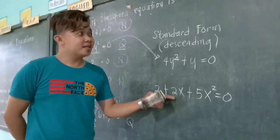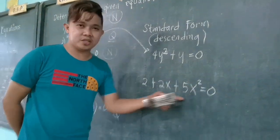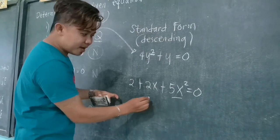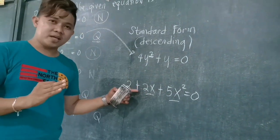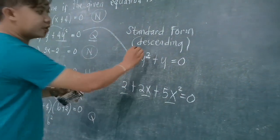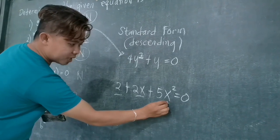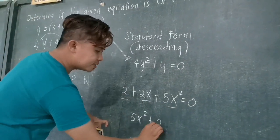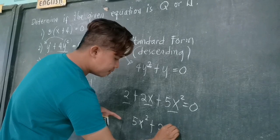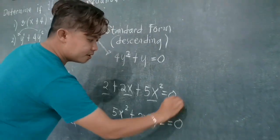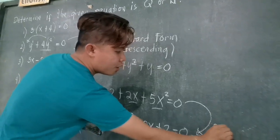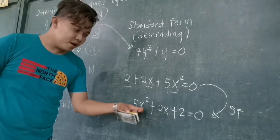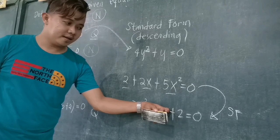How do we write the standard form of 2 plus 2x plus 5x squared? First, is this equation quadratic? Yes — it has a quadratic term, a linear term, and a constant. It is a quadratic equation but not in standard form. In standard form, we write descending: first the quadratic term — 5x squared — then the linear term — plus 2x — then the constant — plus 2 equals 0. This is the standard form, going from the highest degree to the lowest: degree 2, degree 1, then the constant.